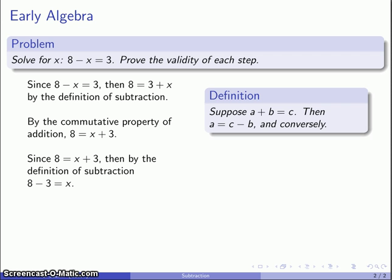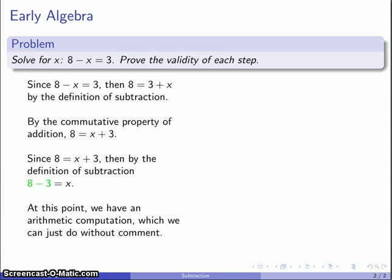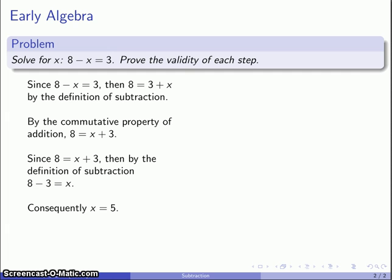Now you might notice over on the left-hand side of our equation we actually have this expression 8 minus 3, and that's just a straightforward arithmetic computation, so I can do this without comment and arrive at our next statement. Consequently, x is equal to 5. And there is our solution to the equation. We've done what's been required. We've solved for x; x is equal to 5.